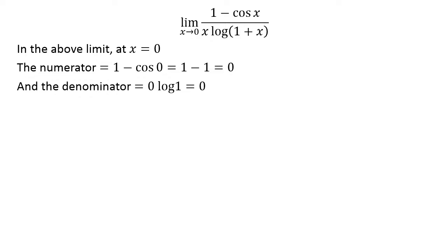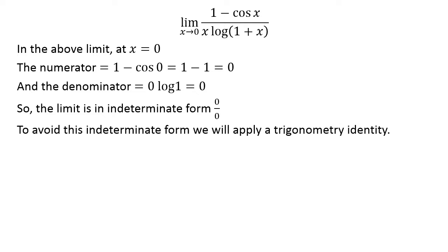In the above limit, at x = 0, the numerator equals 1 - cos 0 = 1 - 1 = 0, and the denominator equals 0 log 1 = 0. The above fact implies that the limit is in the 0/0 indeterminate form. We will avoid this indeterminate form by application of a trigonometry identity.